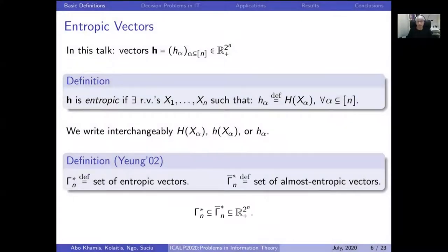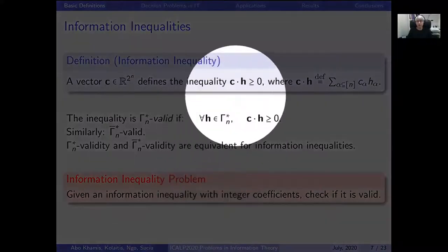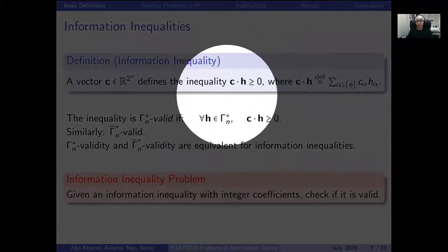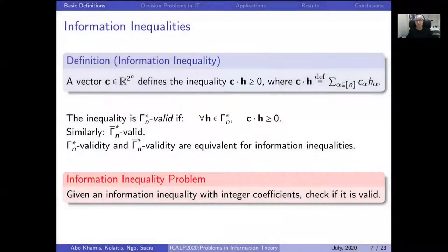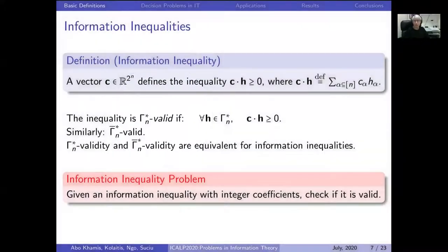With these basic definitions, we can now describe the topic of our talk: information inequalities. These are assertions that a linear combination of entropic terms is greater than or equal to zero. C denotes a vector of coefficients — real numbers — and C·h is the standard dot product. We say the inequality is valid for all entropic vectors, or Γ*, if it holds for all entropic vectors. Similarly, we can refer to validity over almost entropic vectors.